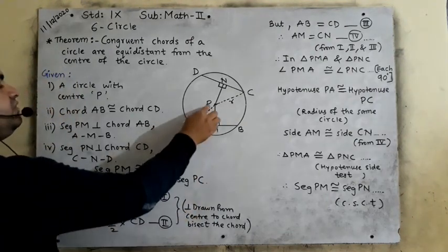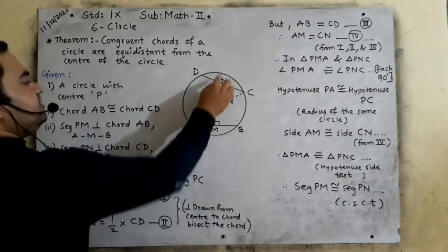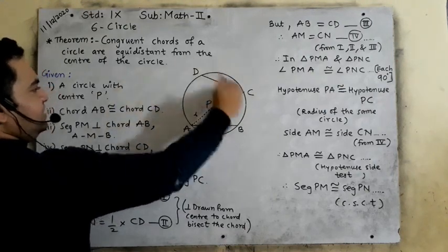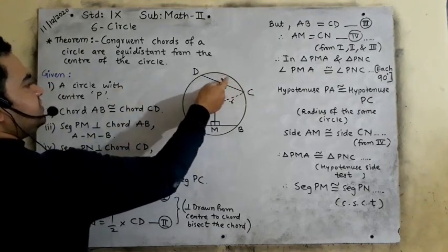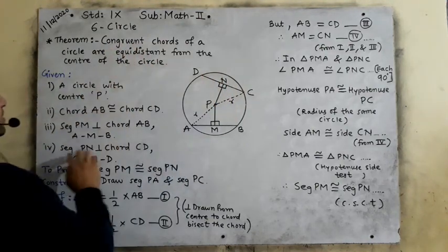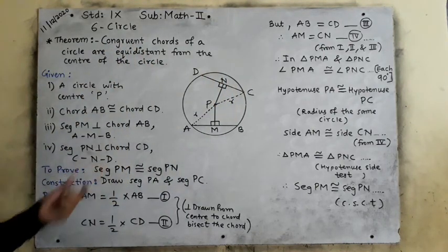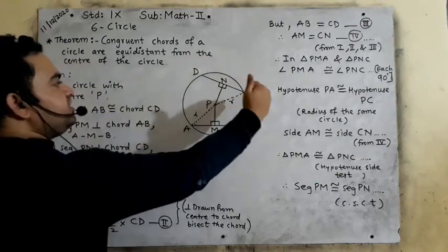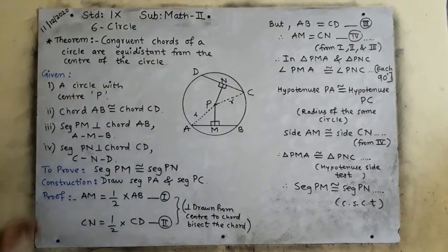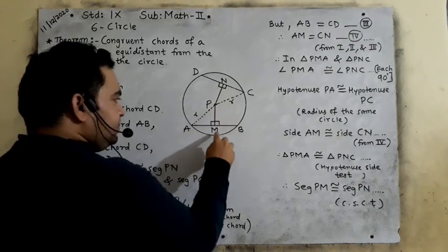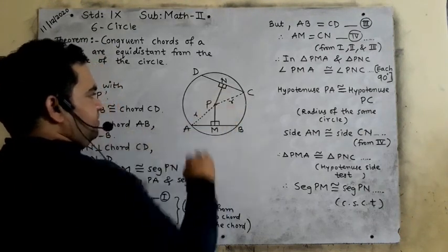Similarly, segment PN is perpendicular on chord CD. Therefore C, N, D — these three points are also collinear points, three points in the line. So what is to be proved? As I have explained, we have to prove that segment PM is congruent to segment PN.